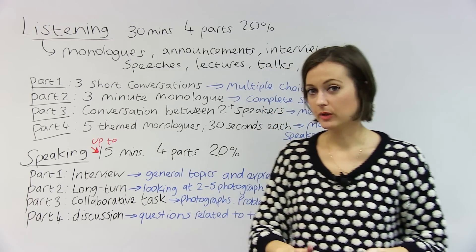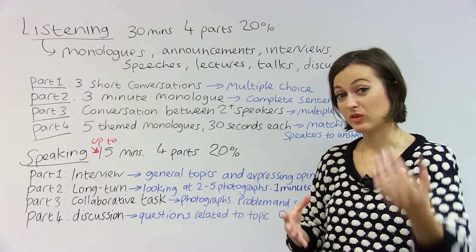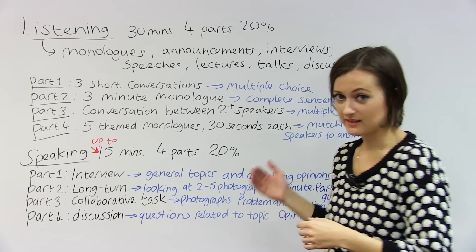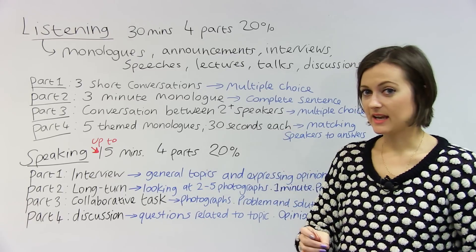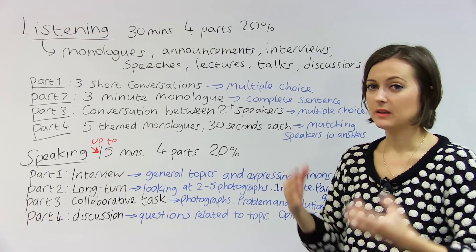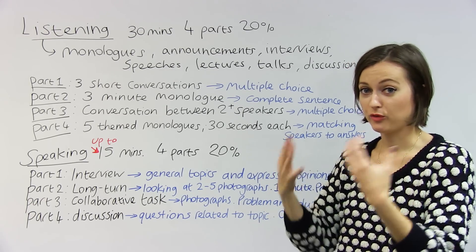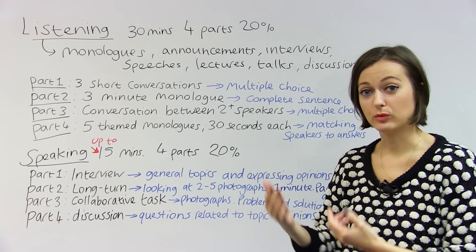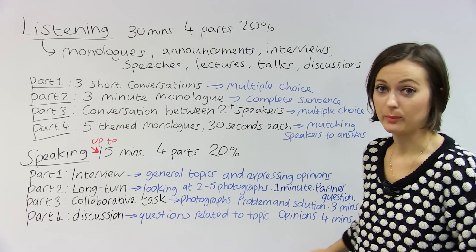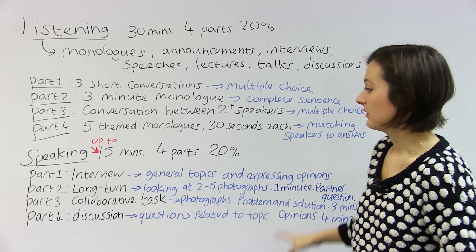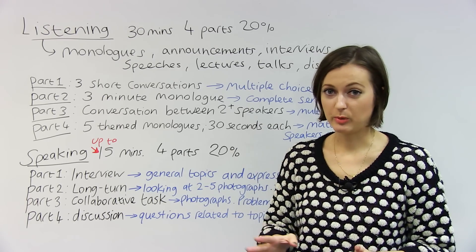And then in part four, you have a discussion. It's you and your partner and the examiner. The examiner asks you questions. And in this part, the questions are related to what you've already been talking about, except that now is the time for you to express your opinions more. So you need to be more forthright. And you can have a little discussion altogether. And this part of the test will be around four minutes long. And altogether, that makes it nearly 15 minutes.